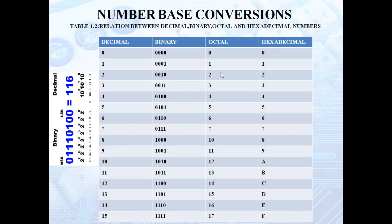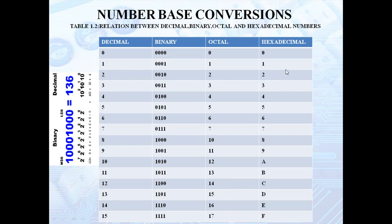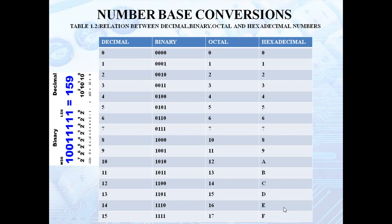The octal number system has digits from 0 to 7. After 7, we start from 10, 11, 12, 13, 14, 15, 16, 17, then 20, 21, and so on. The hexadecimal number system has digits 0 to 9 and from A to F. A is equivalent to 10 in decimal, B is 11, C is 12, D is 13, E is 14, and F is equivalent to 15 in decimal.